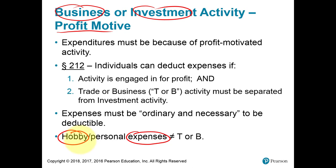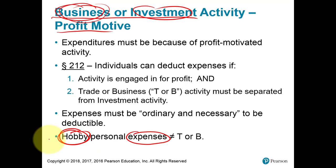Hobby income is reported directly on the 1040 form without any deductions. Whatever deductions you do have for your hobby, you can claim them as an itemized deduction — a miscellaneous itemized deduction reduced by 2% of AGI. So it's best if you have lots of expenses to have your activity be either a business or investment, more so a business, because then if you have losses, those losses are deductible. Hobby losses are not deductible.